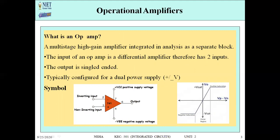This is your symbol for OPAM. You can see there are two inputs. The input of an OPAM is a differential amplifier which has two inputs. The first input is the inverting input and the second one is the non-inverting input. Then we have two power supplies: the positive power supply voltage and the negative power supply. And there is one output at the 6-pin. So this is our symbol for the OPAM.